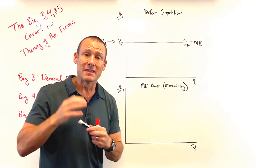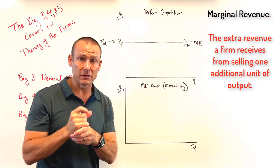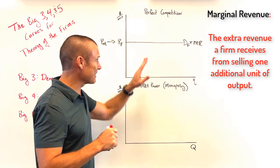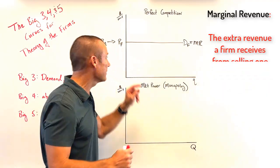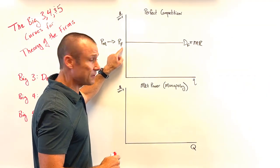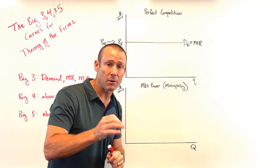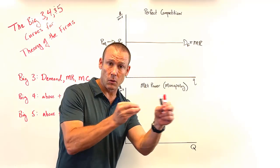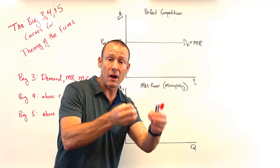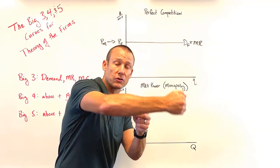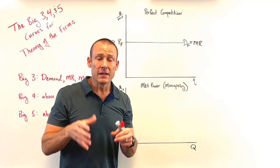So the market price gives me the firm's price, and the firm's price gives me the demand curve for the firm. Now, what is MR? It's the additional revenue from producing one more unit. In perfect competition, the firm can sell as much as it wants at the market price. So MR — the additional revenue for making one more unit — equals the price. Therefore, the demand curve and the MR curve are the same line.